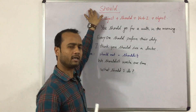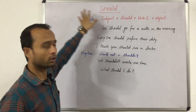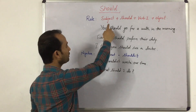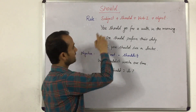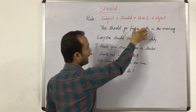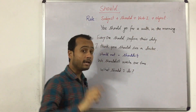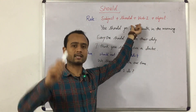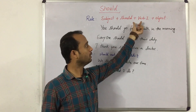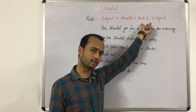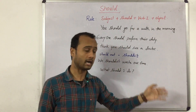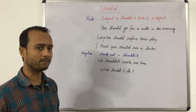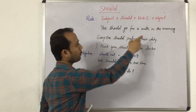It's a very simple modal verb. So first, let's see how to make sentences using SHOULD. The structure is: subject + SHOULD + base form of verb + object. And remember, when we use modal verbs, as I told you in the previous video, there is no S or ES after the verb.